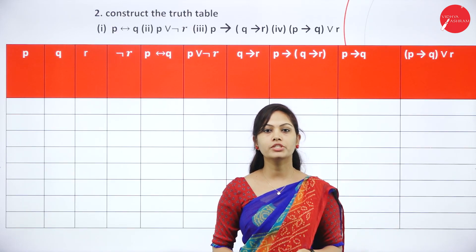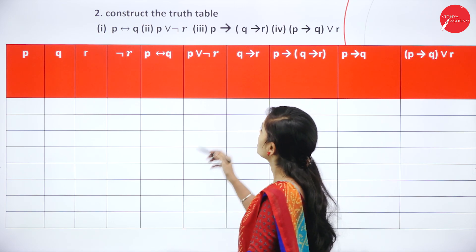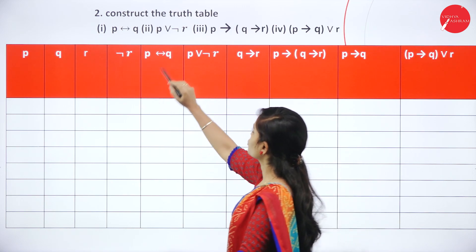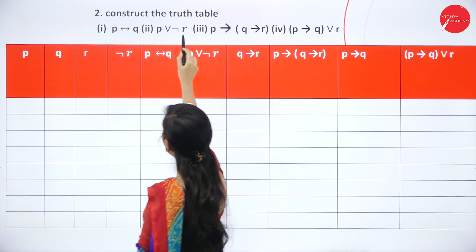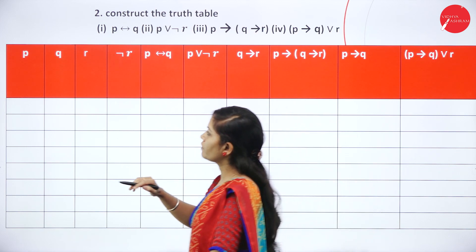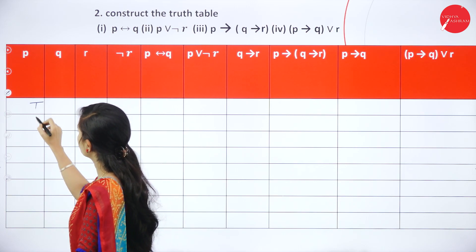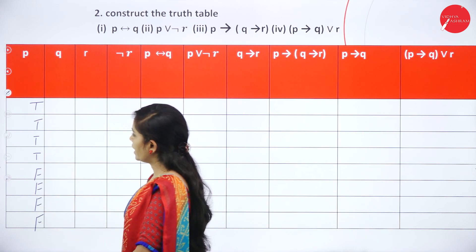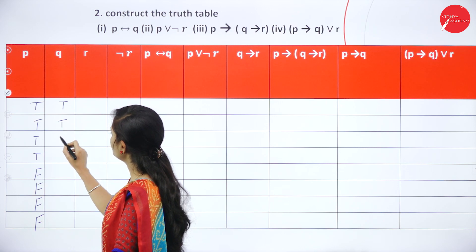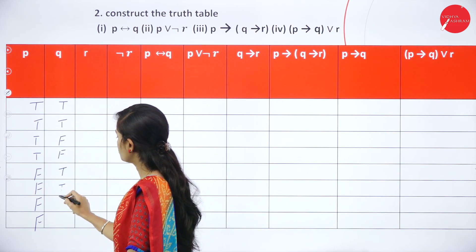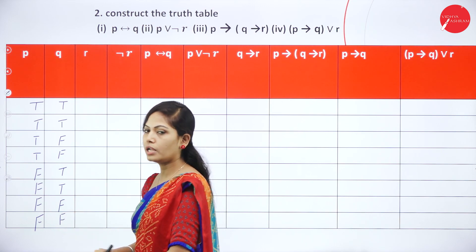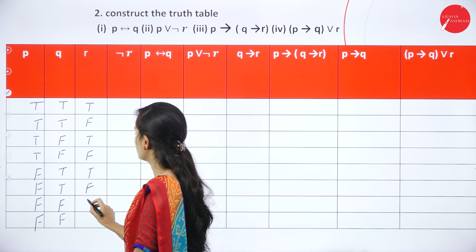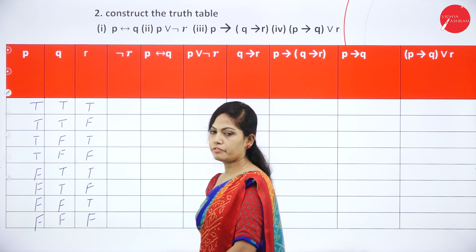The next very important question paper problem is: construct the truth table. First check how many variables are there — here we have three variables P, Q, and R. Write the truth values: first four rows of P are true, next four are false. For Q: two true, two false, two true, two false. For R: alternating true, false.